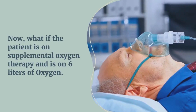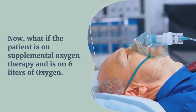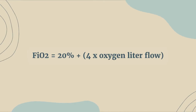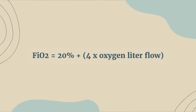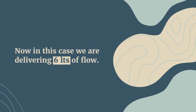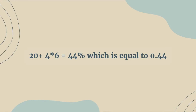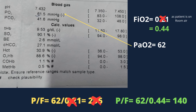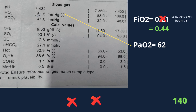Now, what if the patient is on supplemental oxygen therapy at 6 liters of oxygen? What will the FiO2 be? The formula to calculate it is: FiO2 equals 20% plus 4 times the liters of oxygen being delivered to the patient. In this case we are delivering 6 liters, so 20 plus 4 times 6 equals 44%, which equals 0.44 as a decimal. So the P/F ratio equals 62 divided by 0.44, which equals 140.